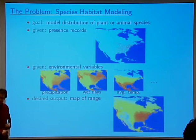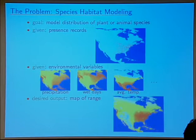We're just taking it that we're given these environmental variables. The desired output is not where they actually live, but where they could live — we're trying to model the potential range of the species rather than the actual range.